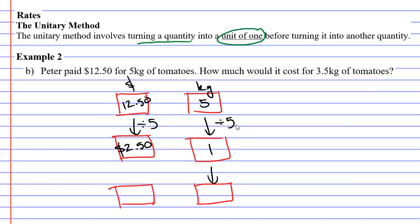Once again, you draw two arrows. We wanted to know the cost for 3.5 kilograms, which means we times the 1 by 3.5 and do the same to both sides. What is $2.50 times 3.5? We get $8.75. That's our solution.